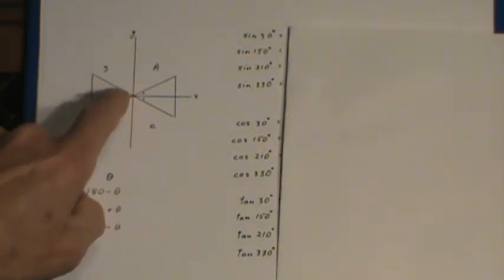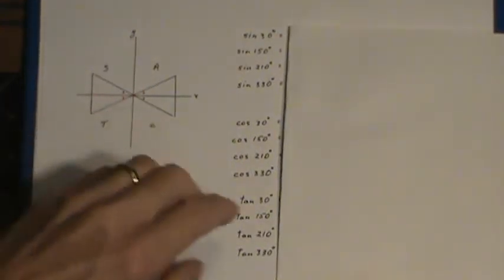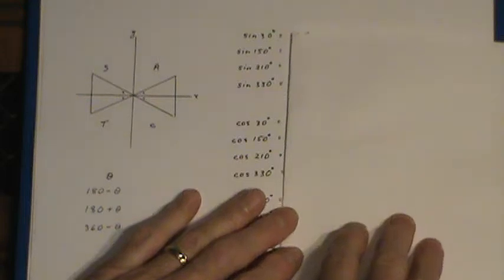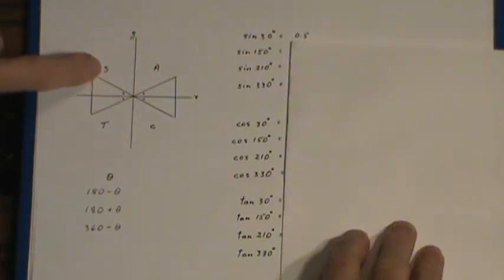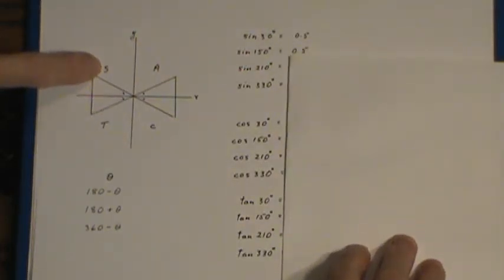30 degrees, 150, 210, and 330. Now if you know that the sine value is 0.5, then the CAST rule tells us that the sine will also be positive in the second quadrant. We get 0.5.